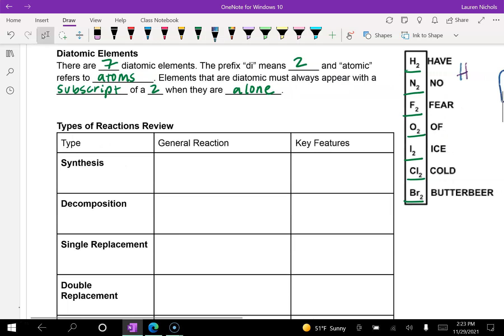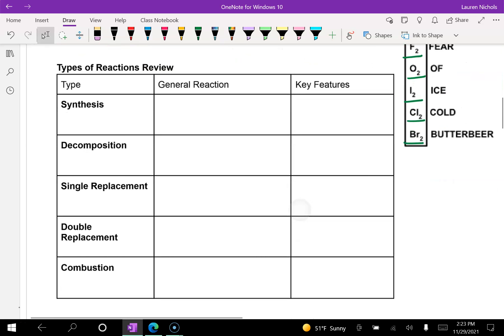Now for our types of reactions review, remember our types of reactions are based on the five types that we learned in unit one. We said that synthesis is like marriage. This is when you have two elements or two people that combine together to form one compound, so AB. And the key features here is that there is only one product. It's a surefire way to recognize when there's been a synthesis reaction.